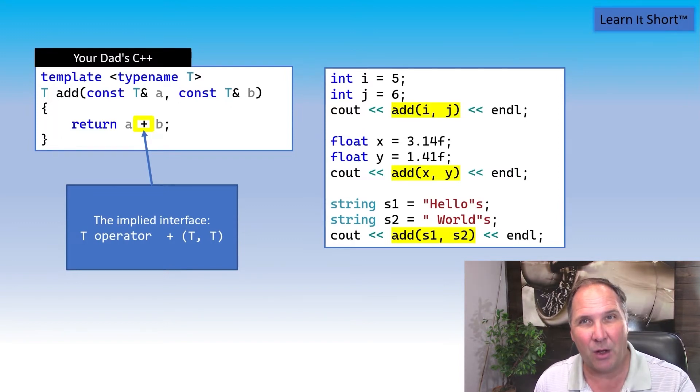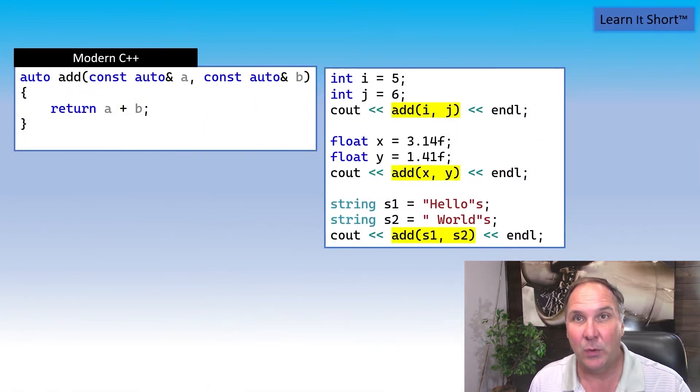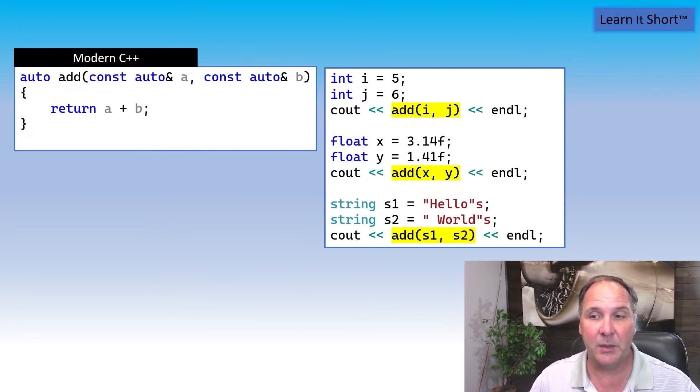Now in modern C++, we can simplify the syntax a little bit. Rather than using the clunky template and the angle brackets, we can simply use the auto keyword to define our parameters and return type if we wish. The C++ compiler generates a template from this auto function.